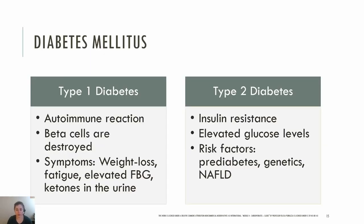Let's talk about diabetes. There are two main forms: type 1 and type 2, and also gestational diabetes, which can occur during pregnancy. Type 1 diabetes can happen at any age; the pancreas does not produce any insulin or very little insulin, and it is thought to be caused by an autoimmune reaction that destroys the beta cells. Someone with type 1 can feel fatigued and experience unintentional weight loss; fasting blood glucose levels are also elevated and ketones may be present in the urine. With type 2 diabetes, cells do not respond normally to insulin — called insulin resistance. Over time, the pancreas continues to pump out more insulin until it cannot keep up, leading to type 2 diabetes. Risk factors include family history, prediabetes, and non-alcoholic fatty liver disease. With both types, elevated blood sugar can lead to heart disease, vision loss, and kidney disease.